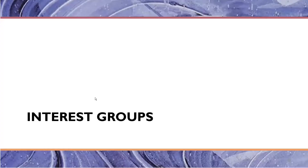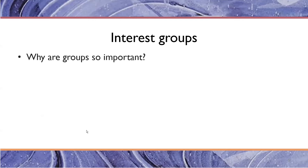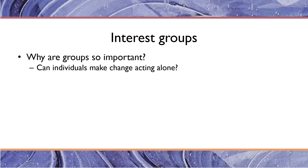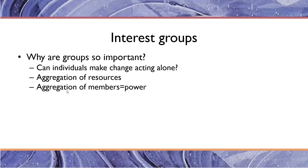So let's start by talking about interest groups. What are interest groups, and why are they so important? Can individuals make change acting alone? In our system, the answer is probably not. It's very difficult for people to influence change just acting by themselves. So what interest groups do is aggregate resources — such as members, money, and expertise. Aggregating members yields greater influence and greater power on the part of these groups.